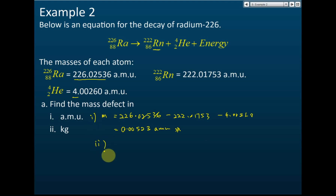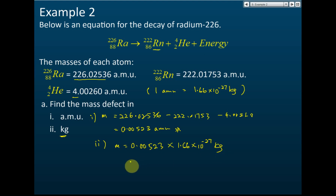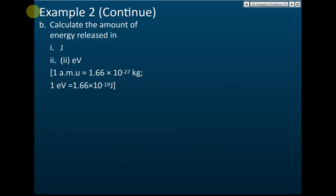Part two: give the answer in kg. They will give you one AMU equals 1.66 times 10 to the power of negative 27 kg. So the mass defect in kg is 0.00523 multiplied by 1.66 times 10 to the power of negative 27, which equals 8.6818 times 10 to the power of negative 30 kg.